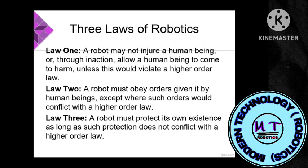A robot should always obey orders given by a human being and should not perform anything by itself. Law Three: a robot must protect its own existence — it should be able to protect itself from anything trying to harm it, unless doing so conflicts with a higher-order law or harms a human being.